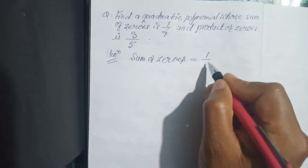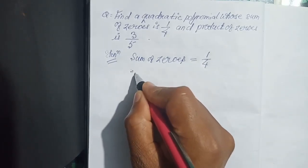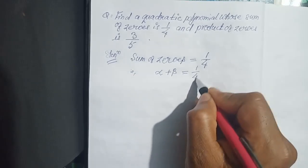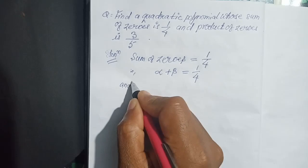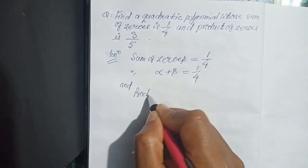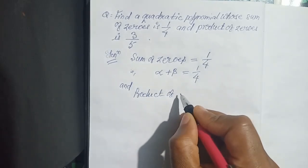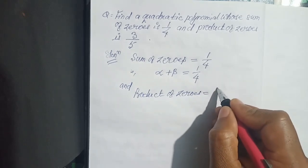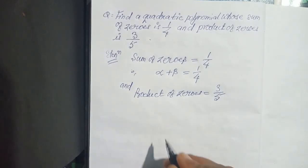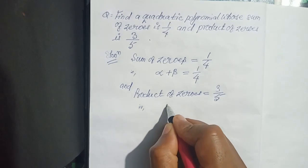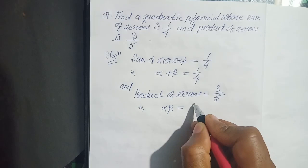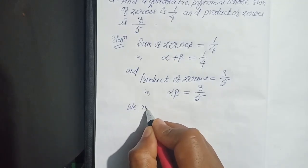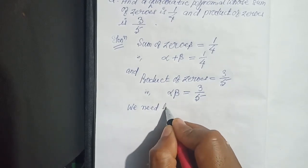equals to 1 by 4, that is alpha plus beta equals to 1 by 4, and product of zeros equals to 3 by 5, that is alpha beta equals to 3 by 5. We need to find out the value of K.